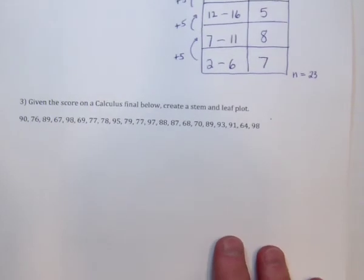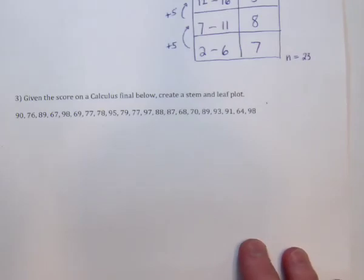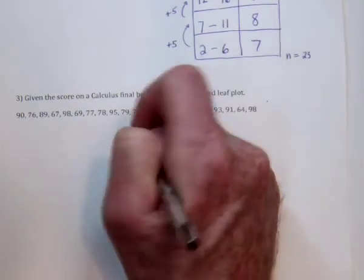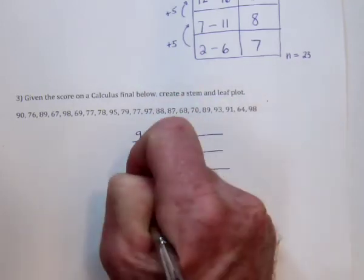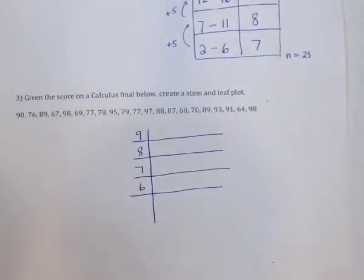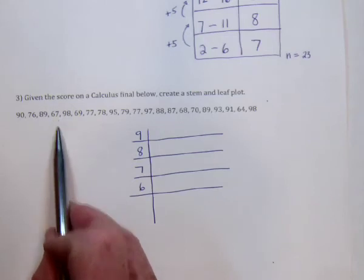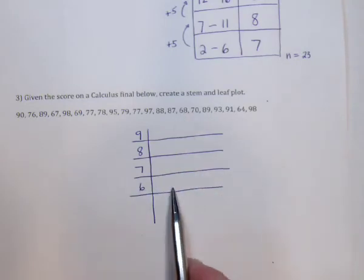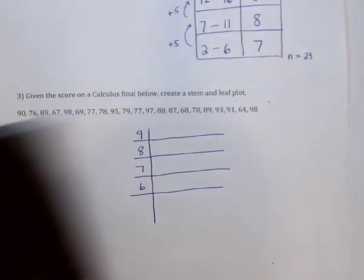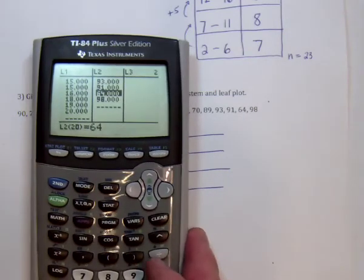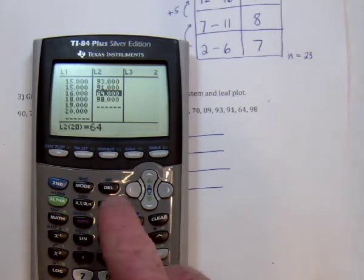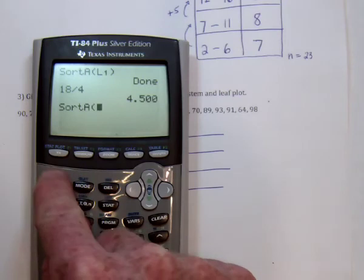Next, create a stem and leaf plot. These are scores from a calculus test. I would report the information to students by drawing it on the board: here are people that got in the 90s, here are the 80s, 70s, 60s. A number like 67 gets split into 6 and 7. It's easier to do if the numbers are in order, so I have the numbers typed into list 2. I'll sort list 2 on the calculator: STAT, Sort A, then Second, number 2.